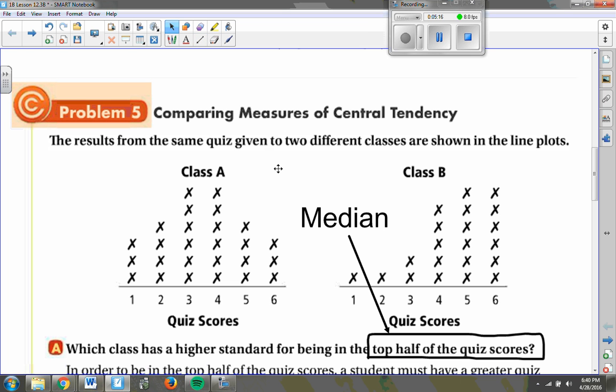So if we have these two sets of data, these two classes of quiz scores between one and six, and we want to compare who has a higher standard for being in the top half, we want to look at who has a higher median. Now, we look at median by canceling out data points until we get to the middle.